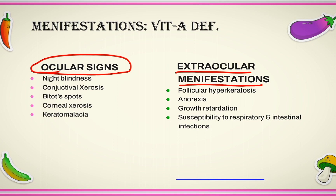Let's discuss firstly the ocular signs. Vitamin A deficiency can present as night blindness, which is a condition in which a person has an inability to see well at night or in poor light. The second condition is conjunctival xerosis, which is a condition in which the conjunctiva appears dull and dry due to vitamin A deficiency.